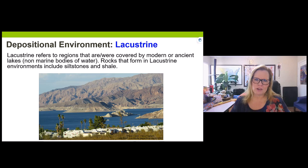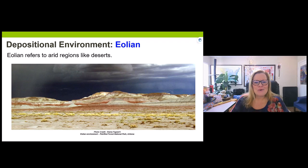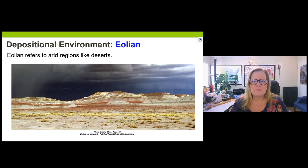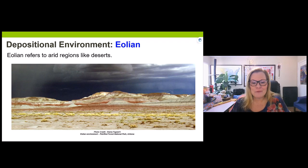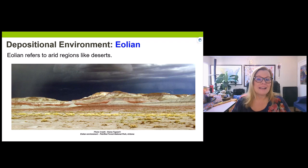Aeolian refers to desert and wind environments. This image is from the Painted Desert and Petrified Forest. You can see a huge storm coming — when it does during monsoon season in July, flash floods can occur. The petrified forest was not always a desert — it was once a forest with large trees. Depositional environments change over time, which is why we look at fossils, minerals, and other clues in rocks.